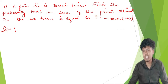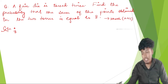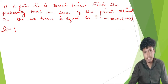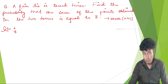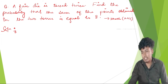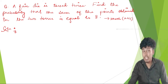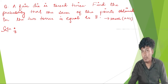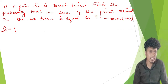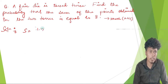The sample space is all ordered pairs (first toss, second toss). For example first toss 4 and second toss 3 gives sum 7, not 8. We need pairs that sum to 8. Let me write the full sample space, which has 6 × 6 = 36 total outcomes.